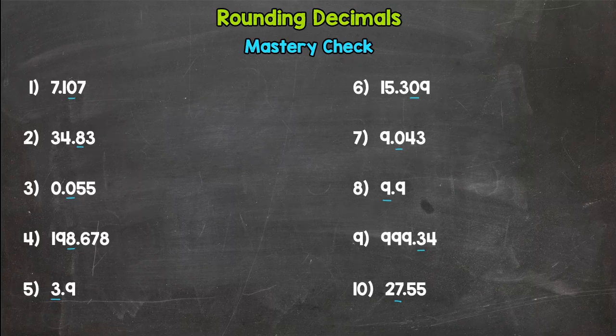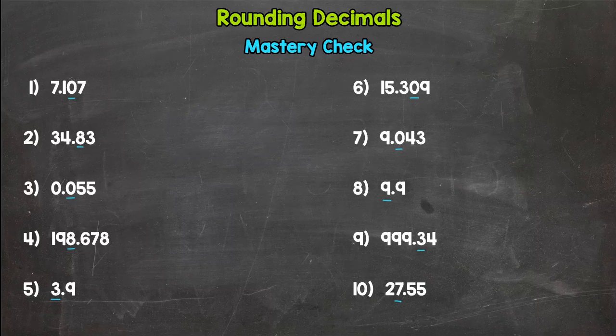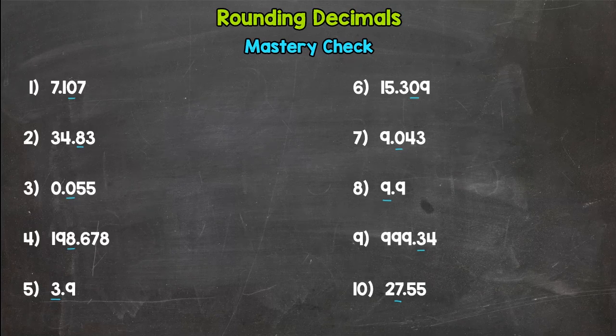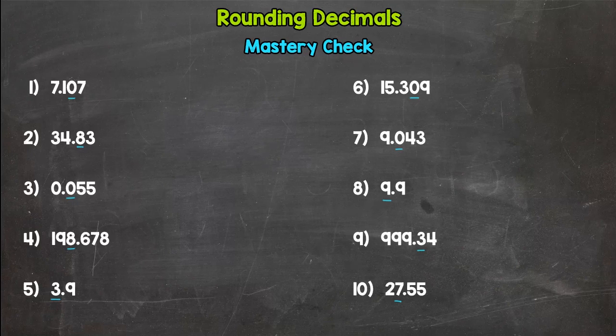So what you're going to do is you're going to round the ten decimals on your screen to the underlined place. So for example, number one, you're rounding to the hundredths place. And like I mentioned before, this is a mastery check so you're going to see basically if you know what you're doing when it comes to rounding decimals.